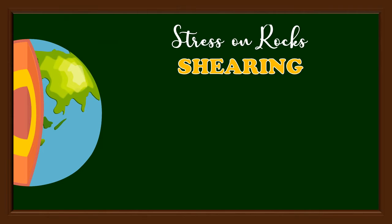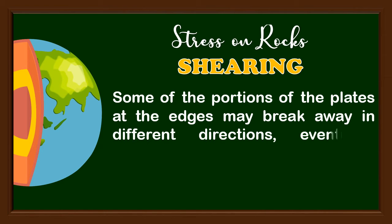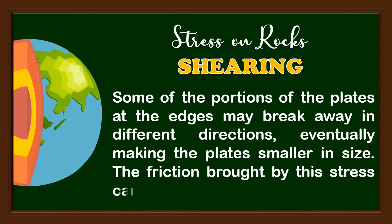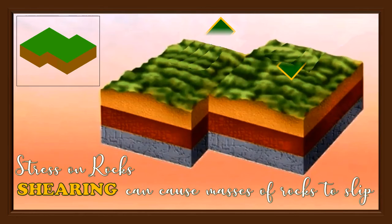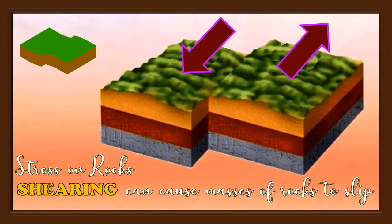The third type is known as shearing stress. Some portions of the plates at the edges may break away in different directions, eventually making the plates smaller in size. The friction brought by this stress can cause earthquakes. Shear stress usually happens at different rates at the boundaries of the plates, and shearing can cause masses of rock to slip. As we can see in the picture, the movement of rocks is in opposite directions.